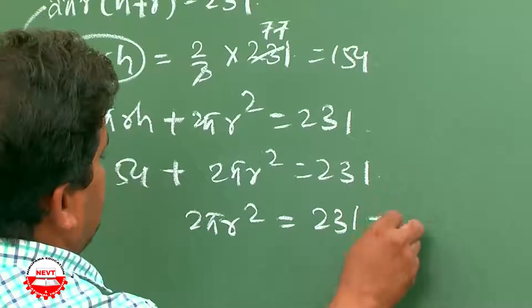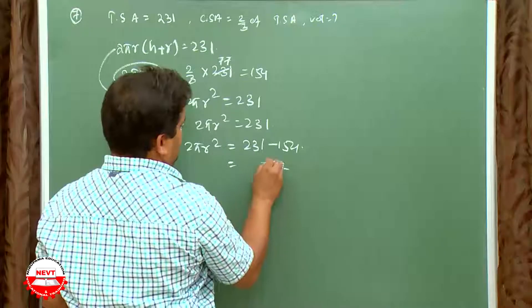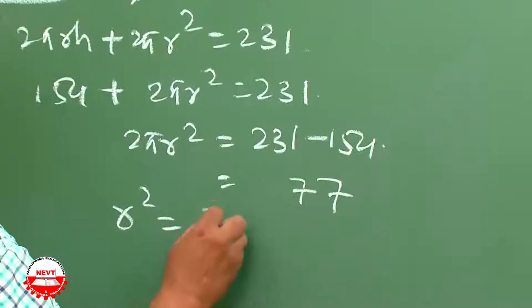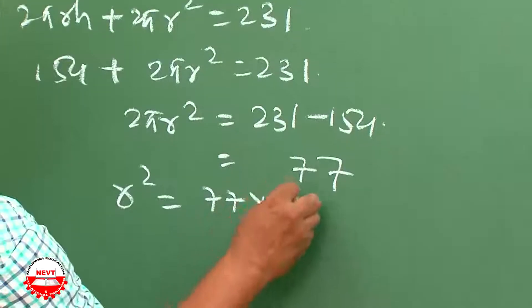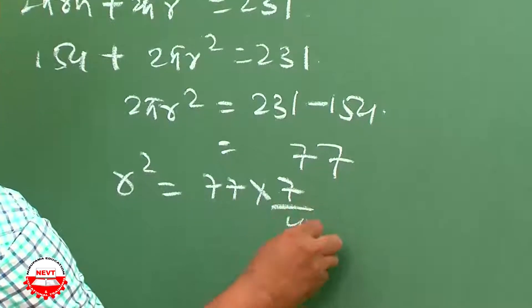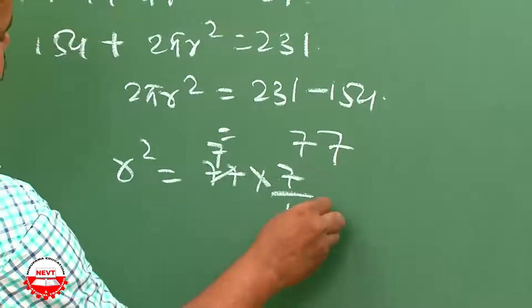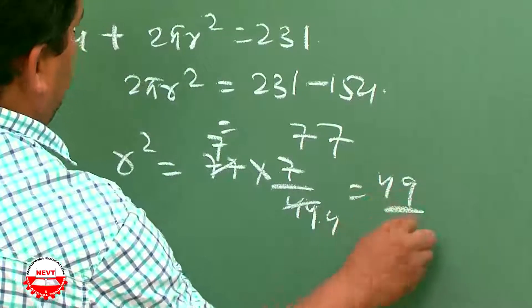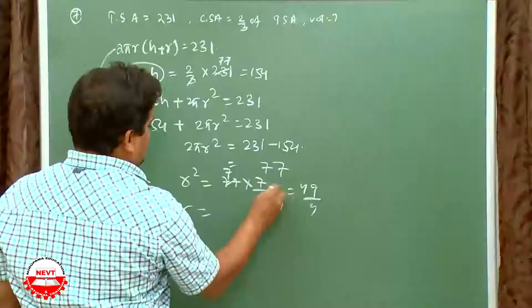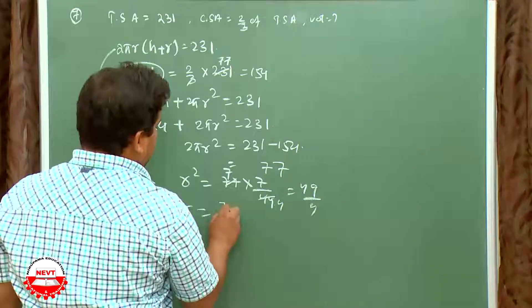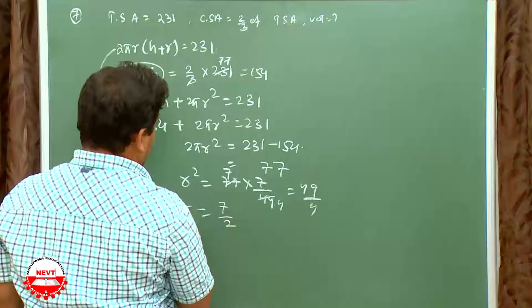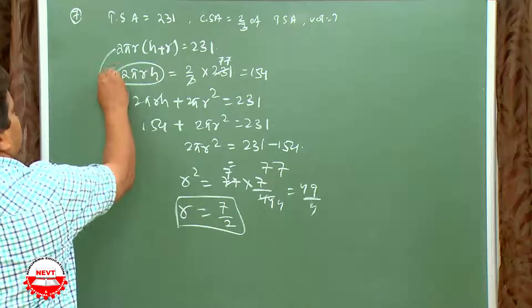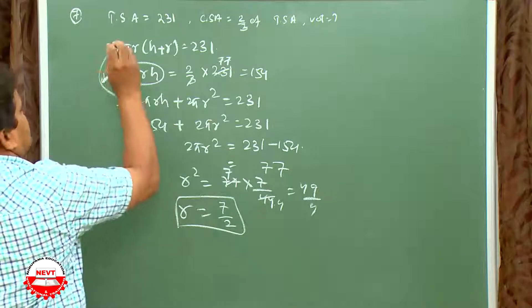So 2πr² = 231 − 154 = 77. Therefore r² = 77 × 7/44 = 49/4, giving r = √(49/4) = 7/2.